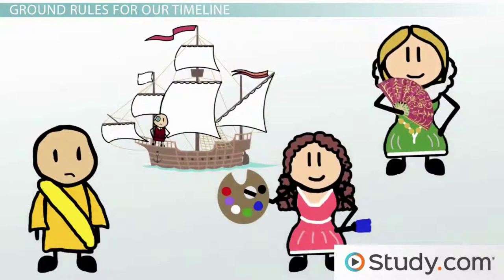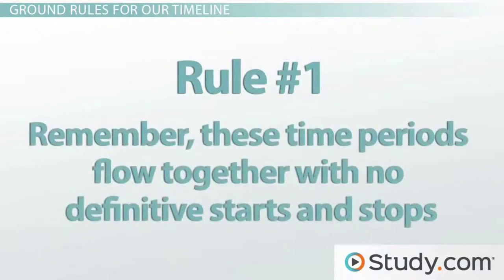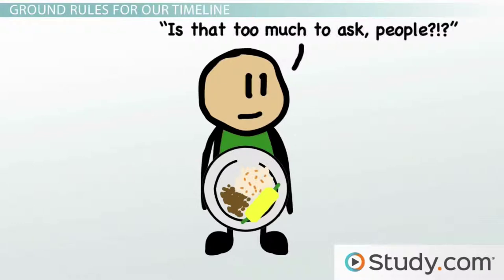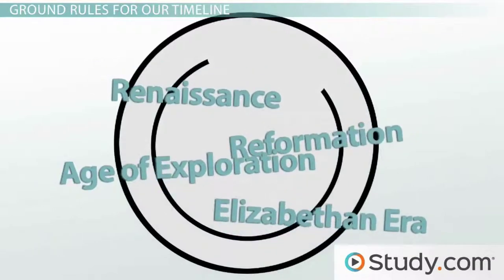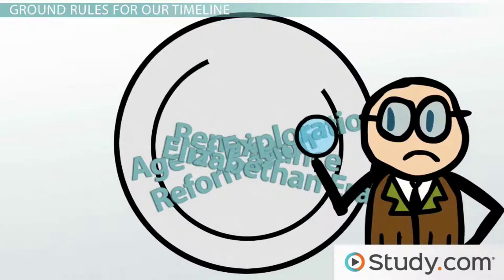Now, before we begin making our timeline, we have two ground rules to cover. Rule number one: remember these time periods flow together with no definitive starts and stops. In truth, they sort of stream into one another. Think of it like your plate at a picnic — no matter how careful you are, the coleslaw always sort of seeps into your baked beans or soaks the underside of your corn on the cob. It's the same way with these eras; they just seep and flow into one another, and even the geekiest of historians don't agree on where one truly starts and the other stops.